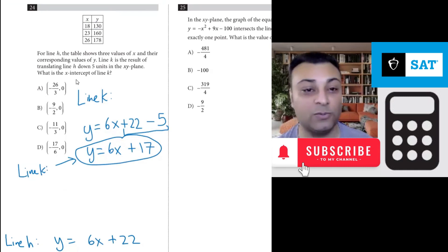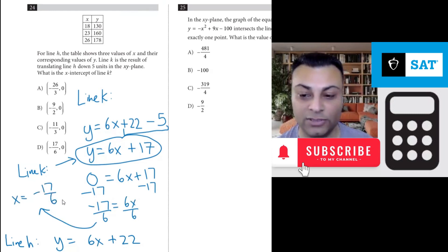And they want the X intercept. That's what happens when you plug in 0 for Y. They even tell you right there the Y coordinate will be 0. So 0 equals 6X plus 17. You go minus 17, minus 17. You have negative 17 equals 6X. You divide by 6, divide by 6. X would be negative 17 over 6 because these will cancel. X equals negative 17 over 6. So the answer is D.